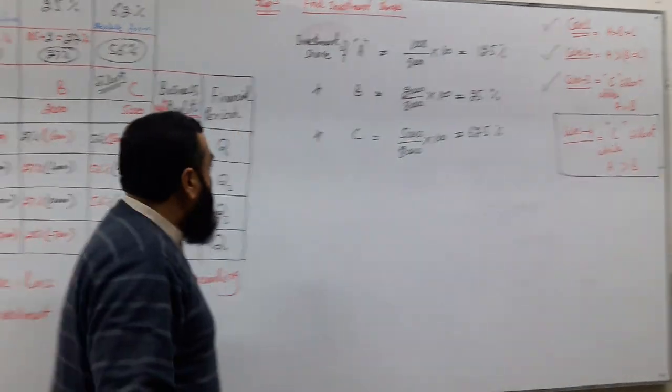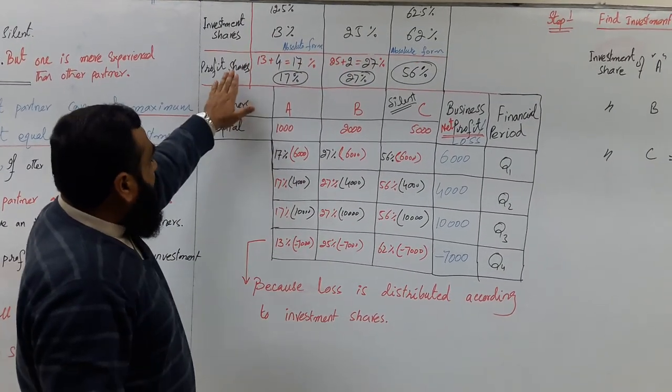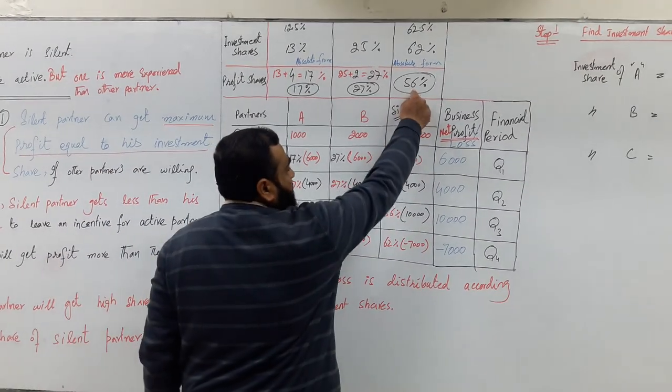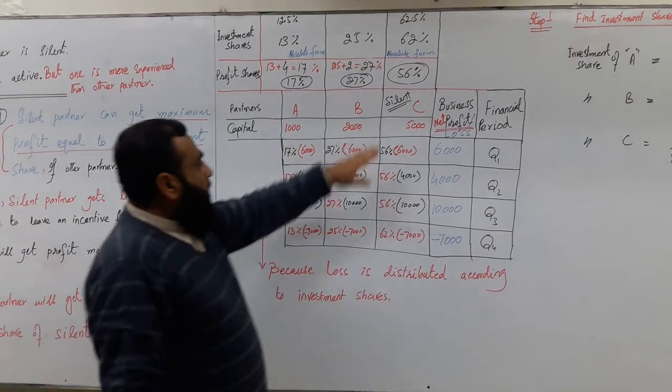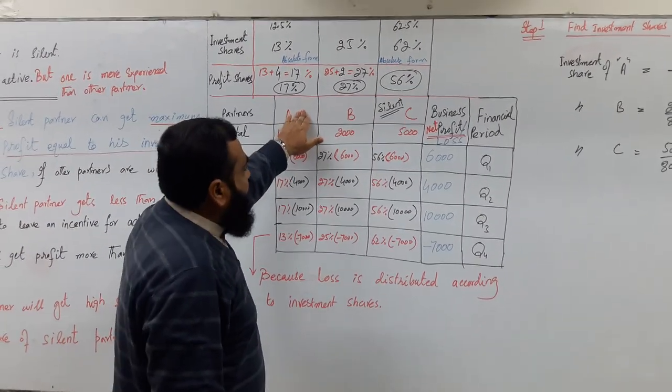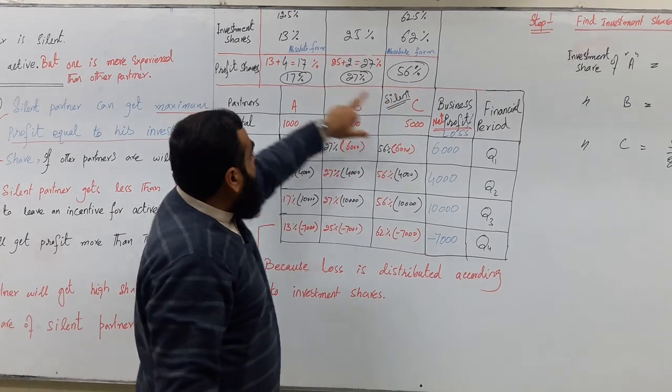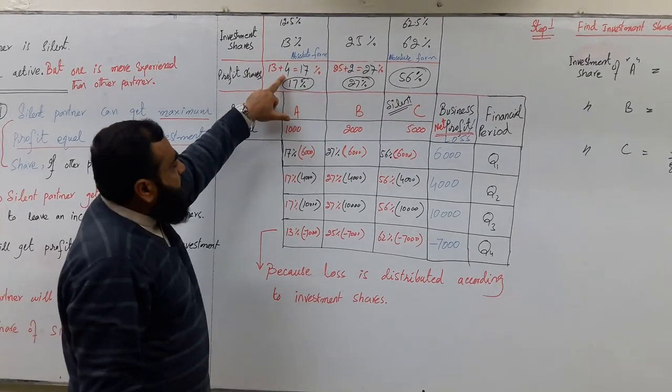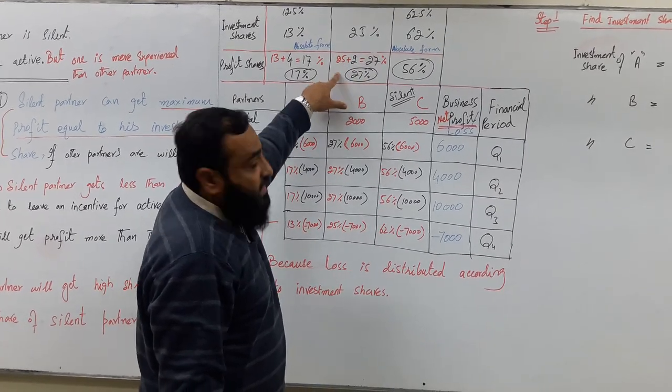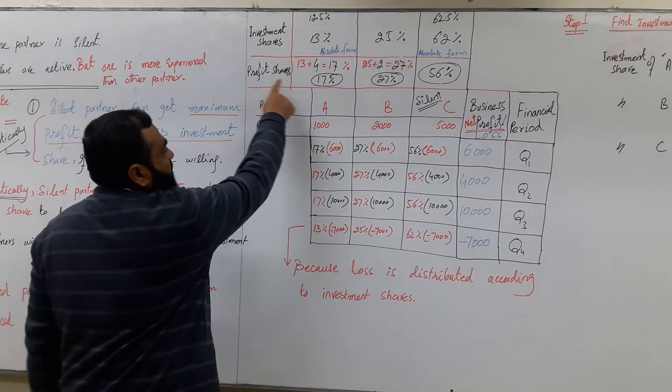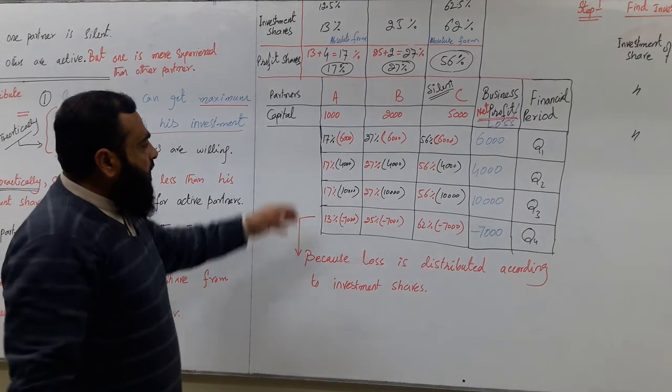So this is the case. Now we found the investment shares - how to distribute profit. We reduced C's share by 6%. Because A was more experienced, out of that 6% that was reduced from the silent partner, we gave 4% to Mr. A, who was more experienced, and we gave 2% to Mr. B because he was less experienced. Then their profit shares become 17%, 27%, and 56%.